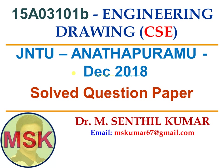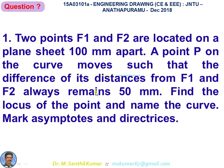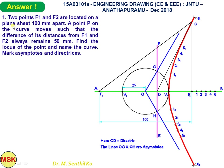Let us see the first question. Two points F1 and F2 are located on a plane sheet 100 mm apart. A point P on the curve moves such that the difference of its distances from F1 and F2 always remains 50. Find the locus of the point and name the curve; mark asymptotes and directrices.